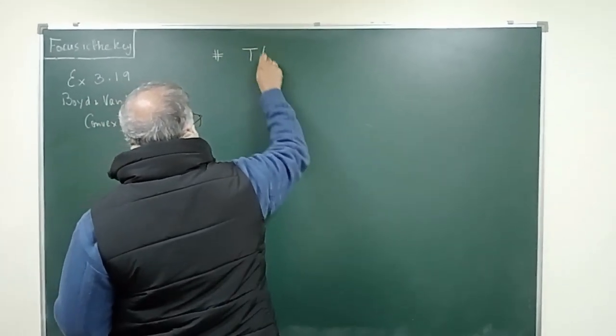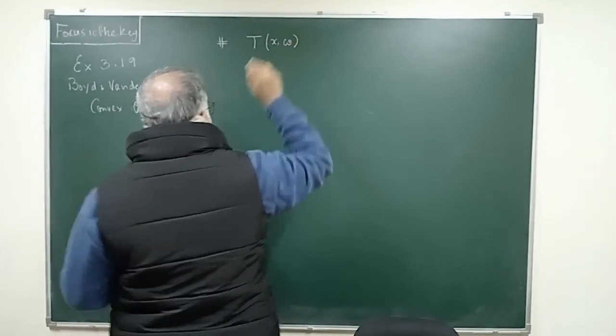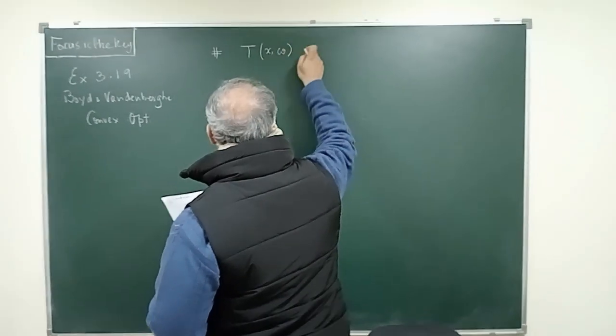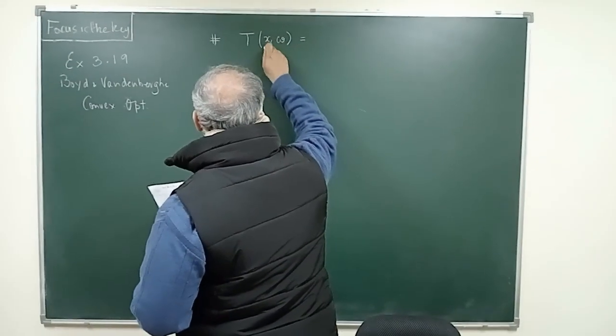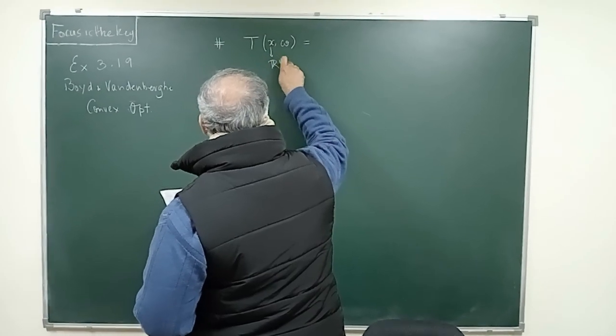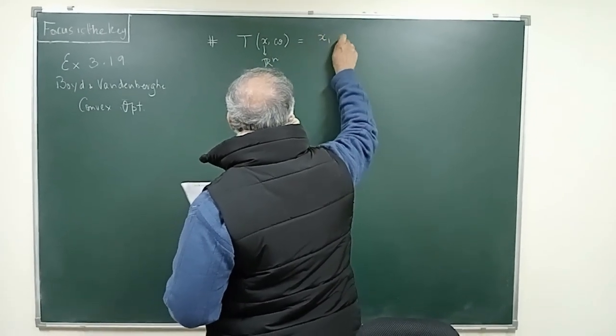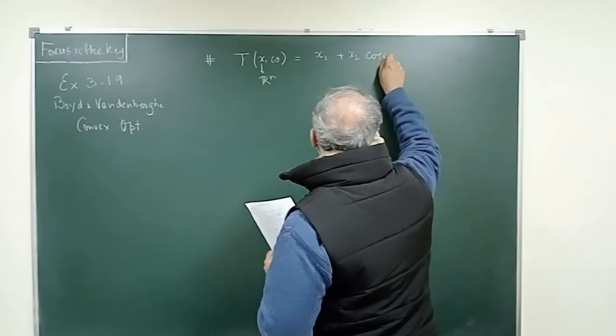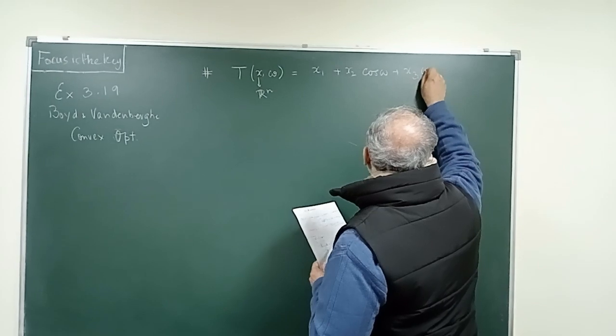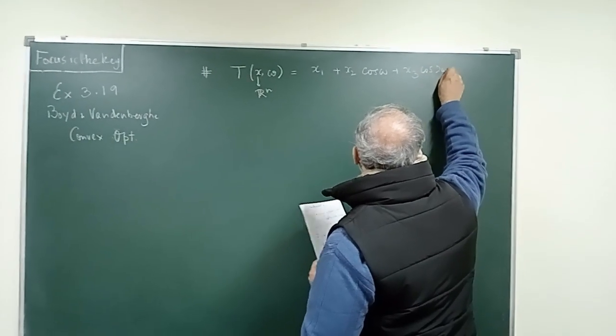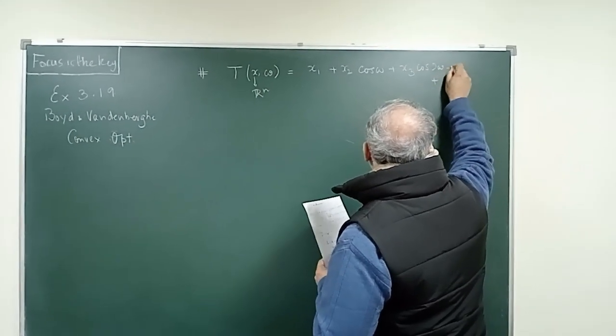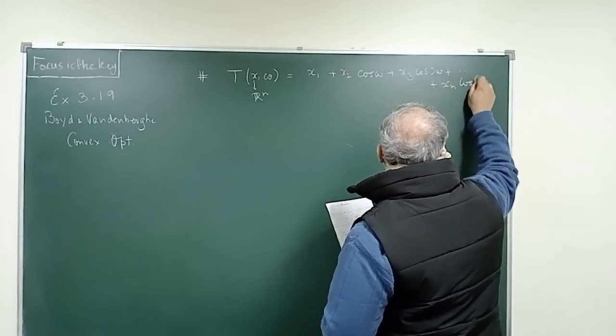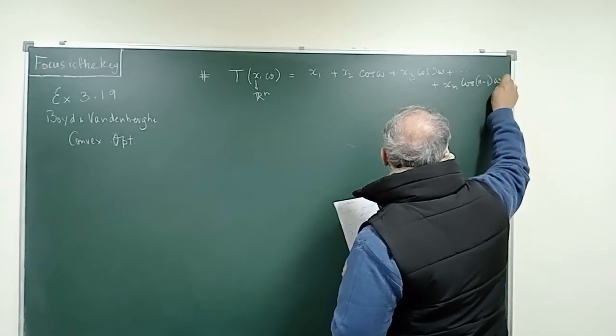Here is the trigonometric polynomial for any given omega lying between 0 and 2π. x is a vector in R^n and this is expressed as x₁ + x₂ cos(ω) + x₃ cos(2ω) + ... + xₙ cos((n-1)ω). You can now understand that the general form is cos((n-1)ω).